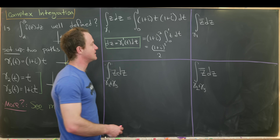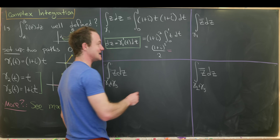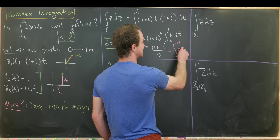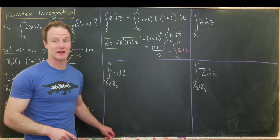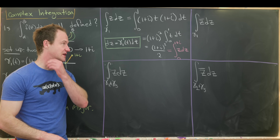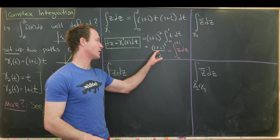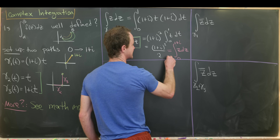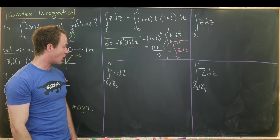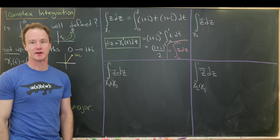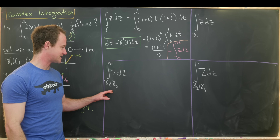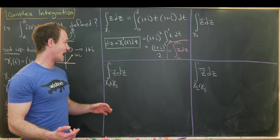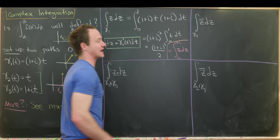Suspiciously, this looks exactly like what we would have gotten if we had naively integrated from zero to 1+i of z dz by taking the antiderivative of z, which gives z²/2, and then plugging in the endpoints. What we're trying to figure out is: was that just luck, or does this happen for all nice functions? If the second path gives the same answer, that gives us evidence that the integral is path independent.